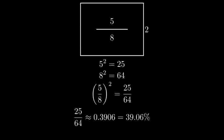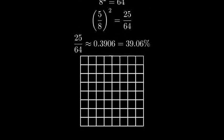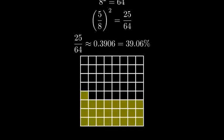To verify this visually, imagine a square divided into 64 equal parts. 25 of these parts represent our answer, which is indeed about 39% of the whole square.